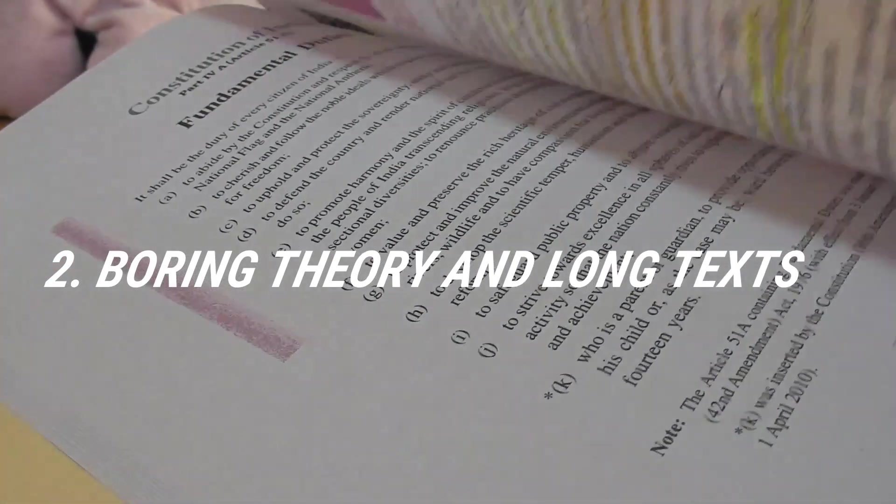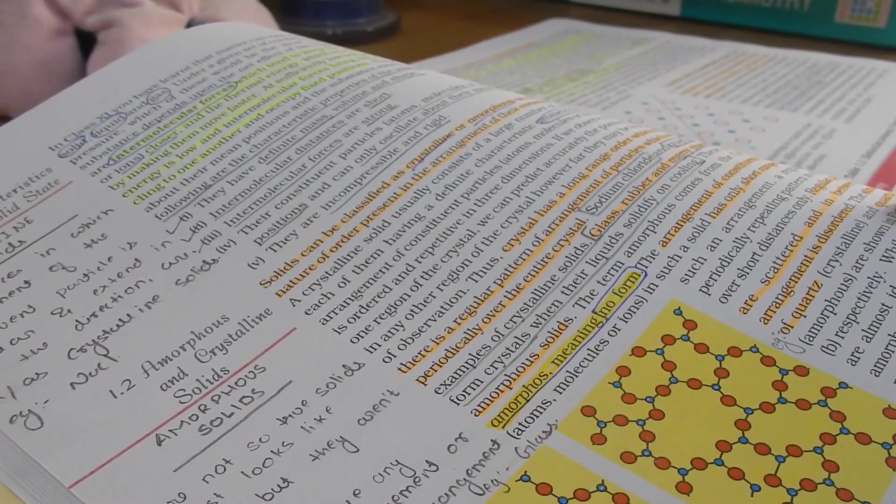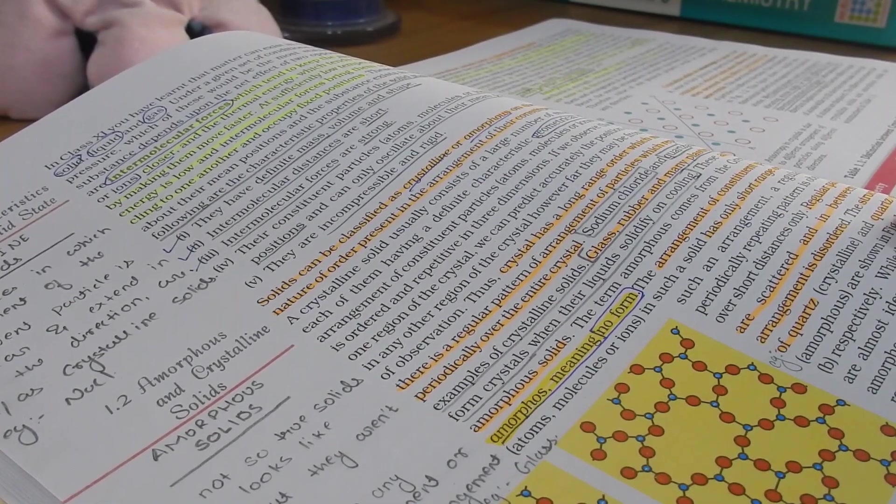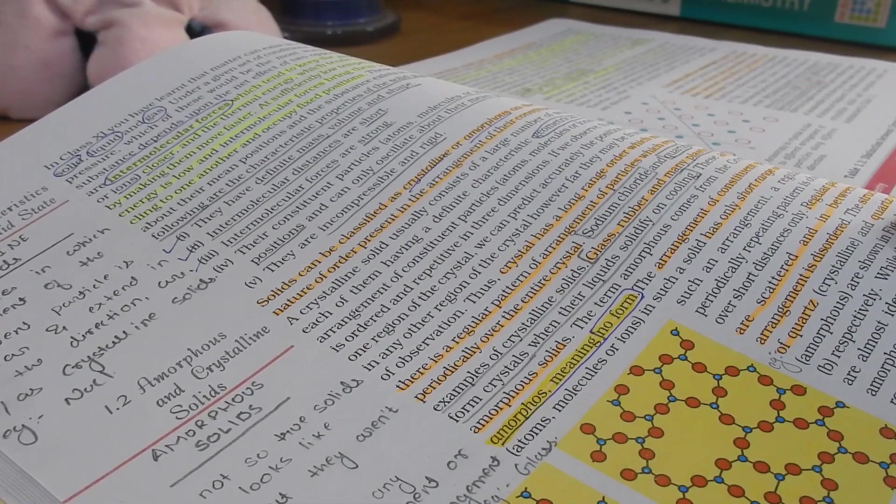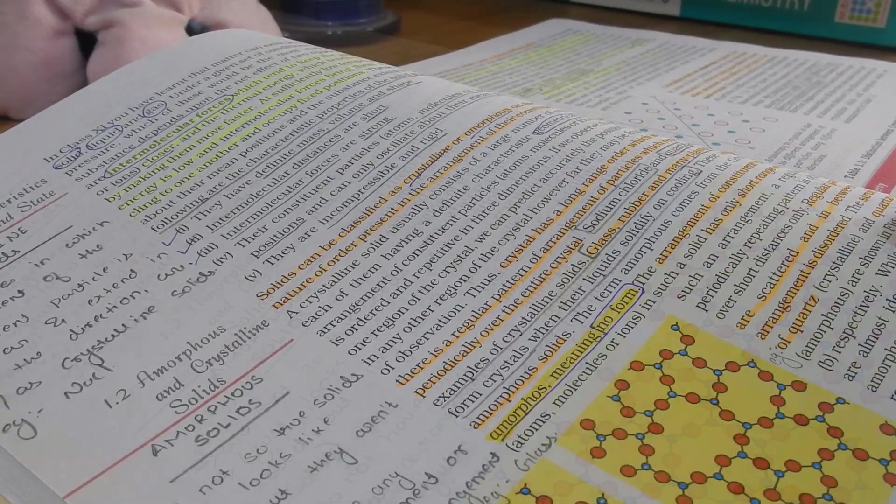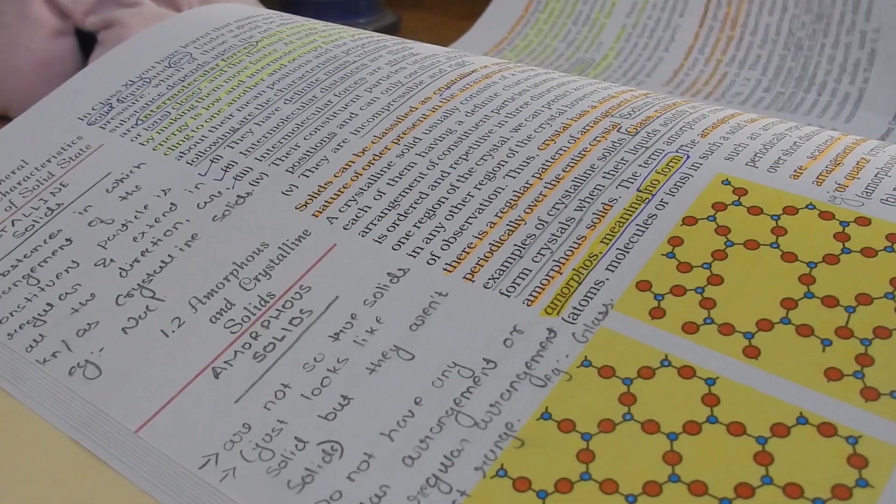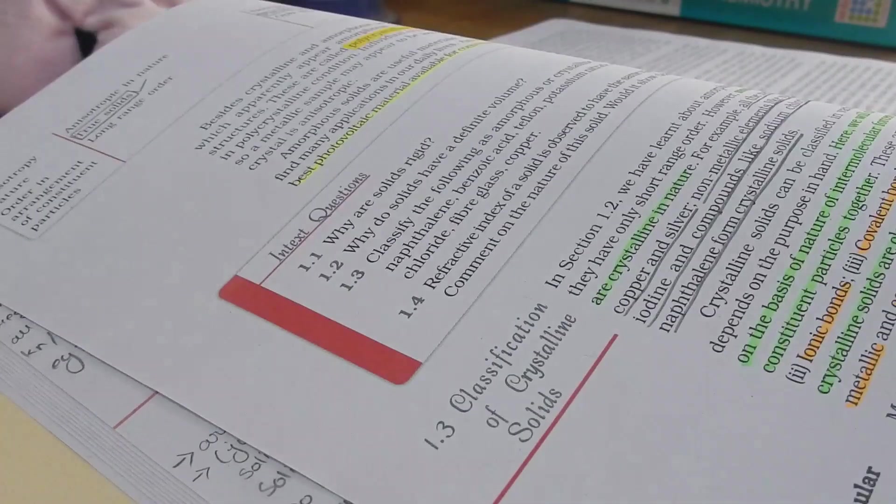Second is boring theory and long text. You never skip a single line in biology NCERT, right? Then why this discrimination here? Carefully read and try to memorize. Don't just think that understanding concepts is going to solve everything. Read it, understand it, memorize it, and repeat it.